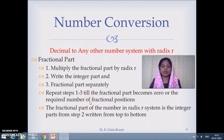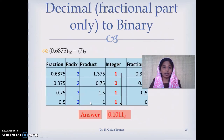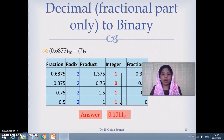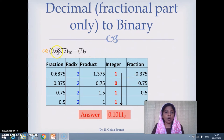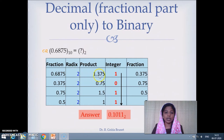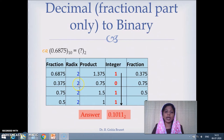We will see an example so that we can understand better. We want to convert 0.6875 in decimal number system to binary number system. This is the fraction, and 2 is the radix to which we want to convert. We multiply to get the product 1.375. We write the integer part 1 separately and the fractional part is 0.375. We multiply 0.375 by 2 and get 0.75.